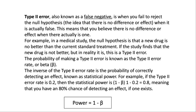Type 2 error, also known as a false negative, is when you fail to reject the null hypothesis — the idea that there is no difference or effect — when it is actually false. This means that you believe there is no difference or effect when there actually is one. For example, in a medical study, if the study finds that the new drug is not better but in reality it is, this is a Type 2 error. The probability of making a Type 2 error is known as the Type 2 error rate, or beta. The inverse of the Type 2 error rate is the probability of correctly detecting an effect, known as statistical power.